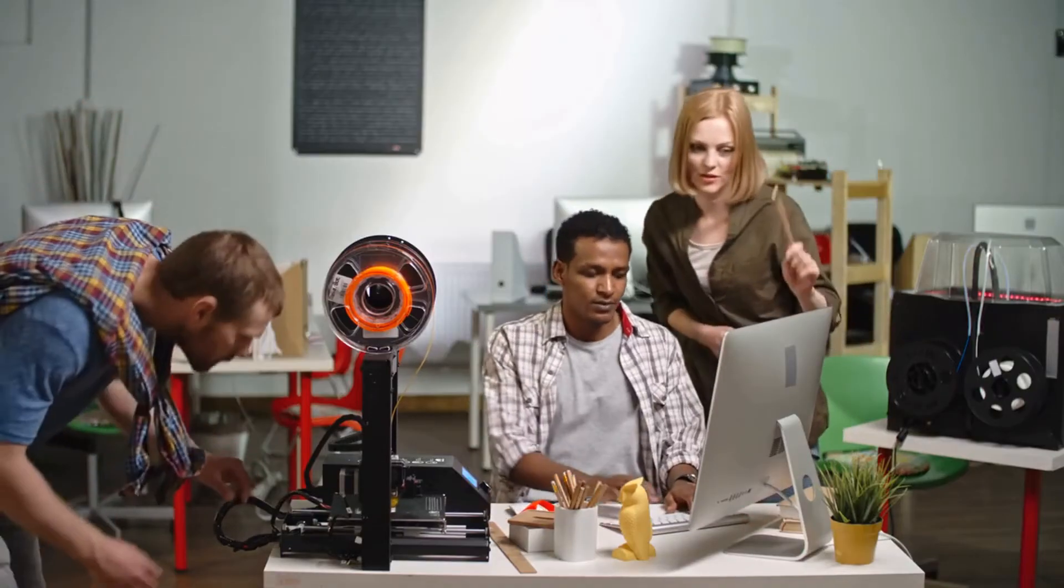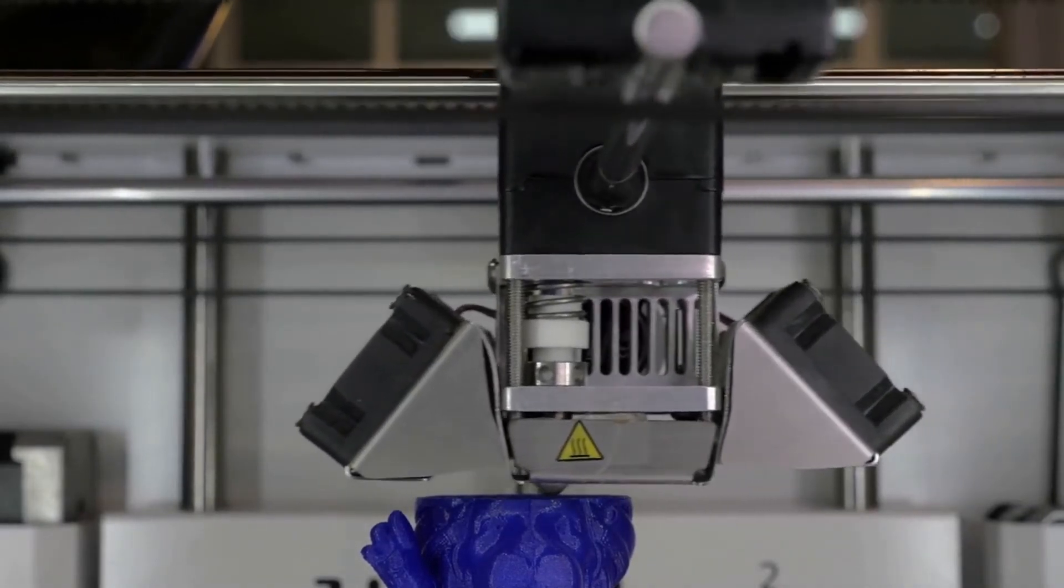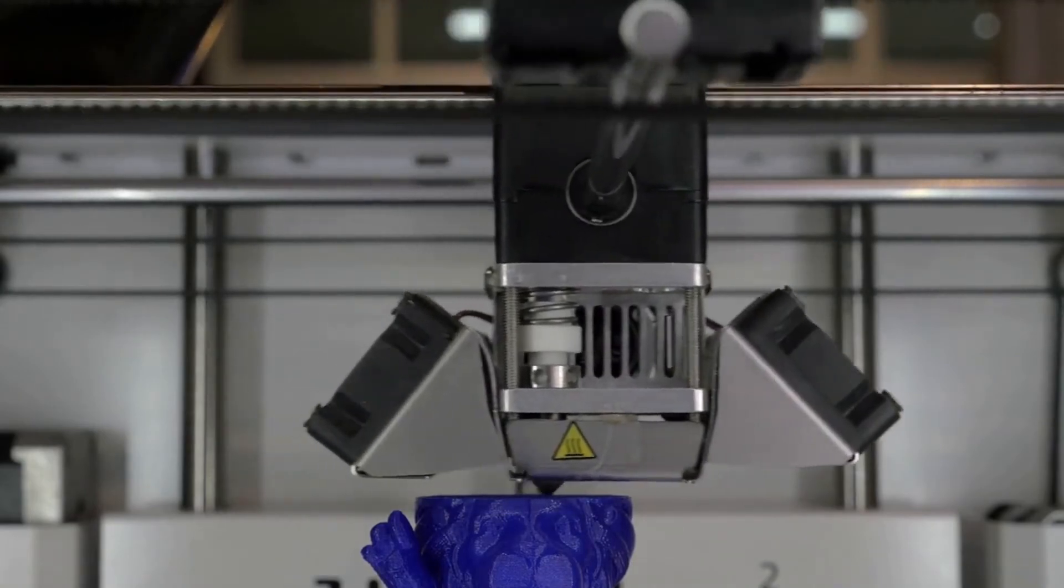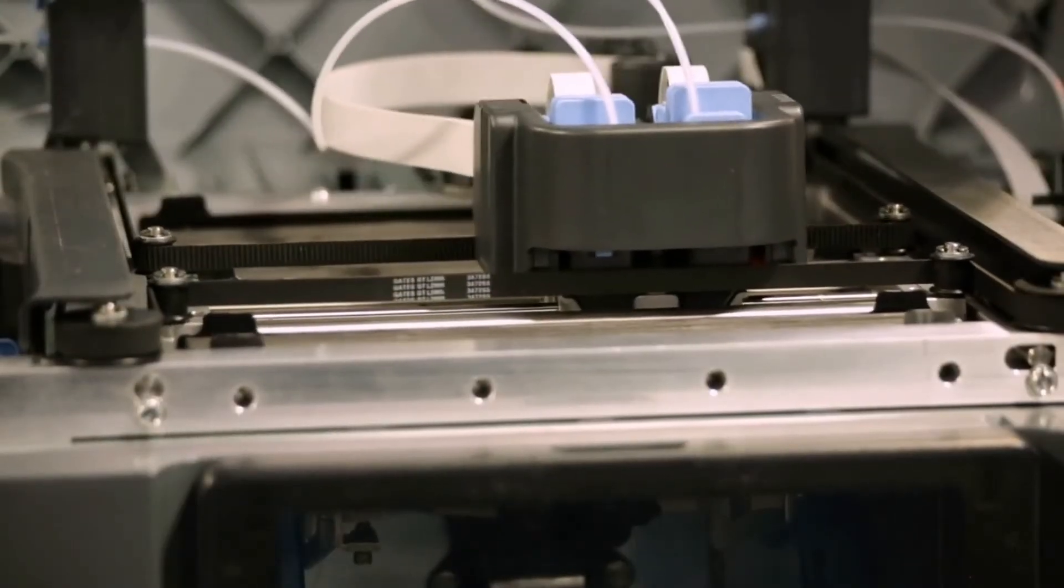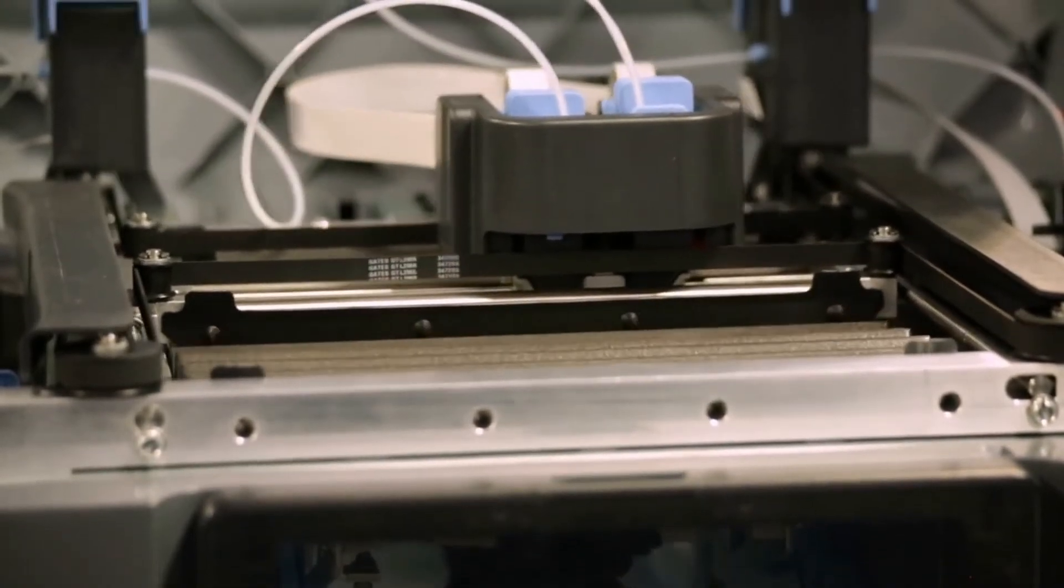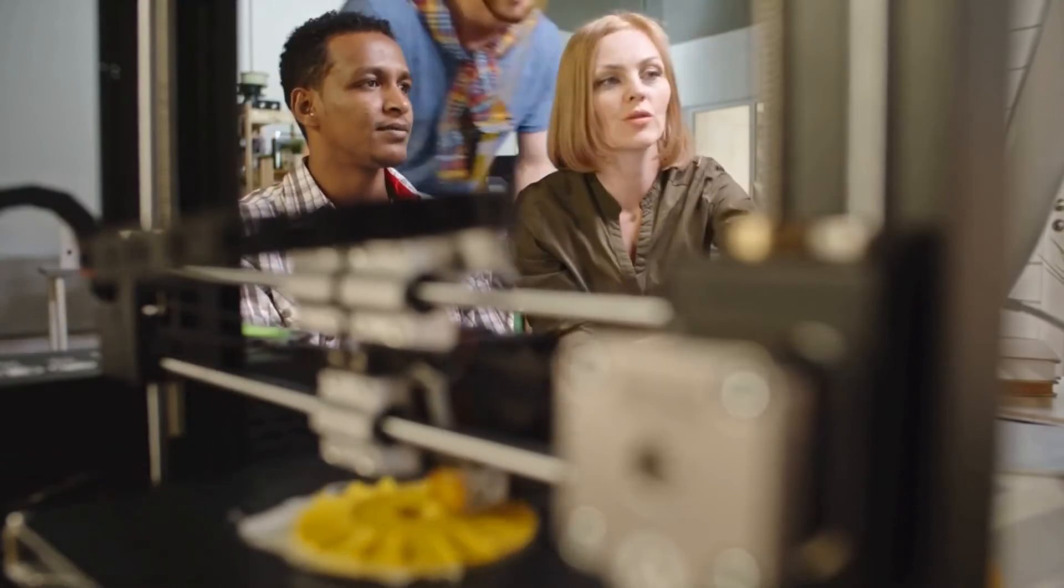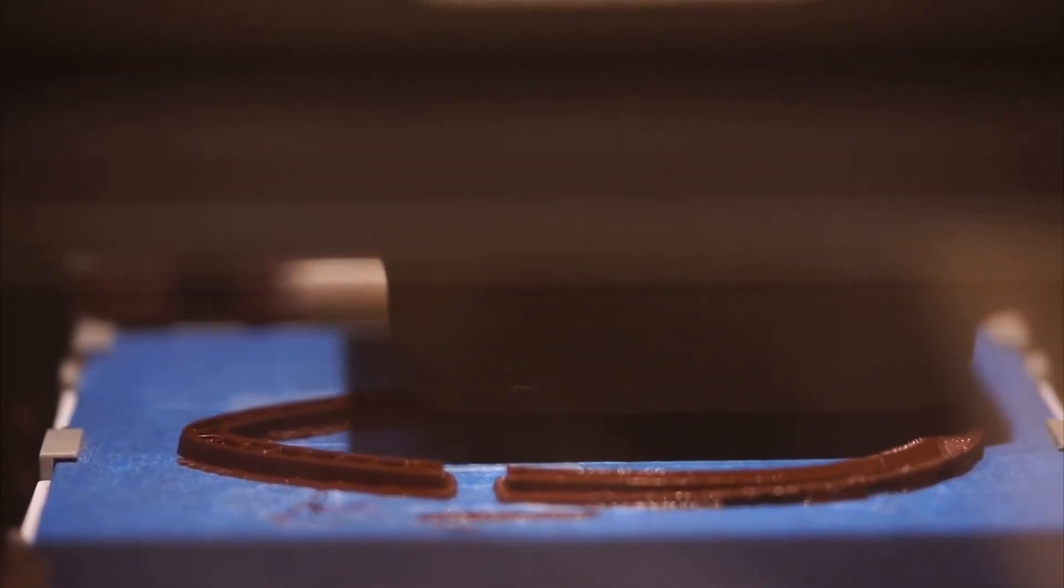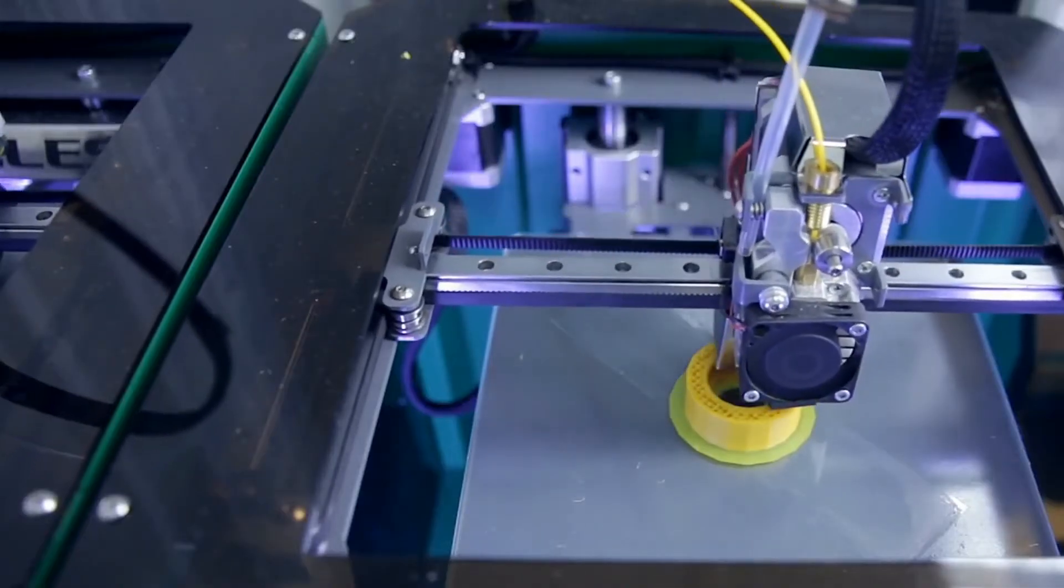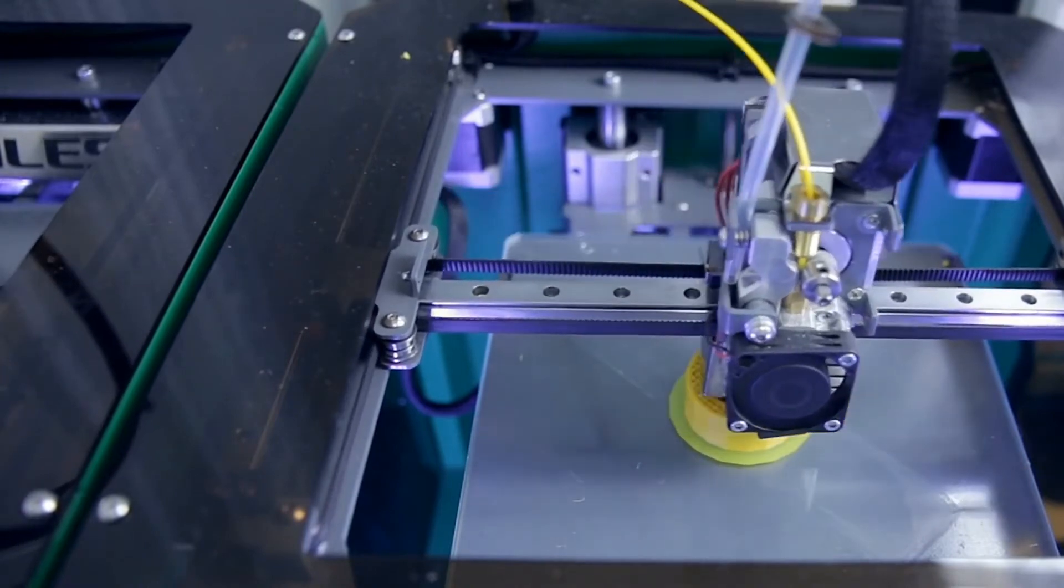Fused deposition modeling (FDM) is a common desktop 3D printing technology for plastic parts. An FDM printer functions by extruding a plastic filament layer by layer onto the build platform. It's a cost-effective and quick method for producing physical models. There are some instances when FDM can be used for functional testing, but the technology is limited due to parts having relatively rough surface finishes and lacking strength.